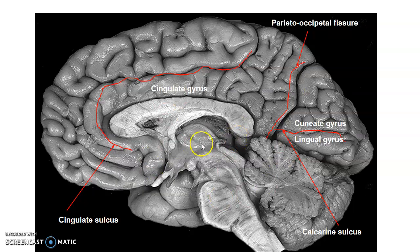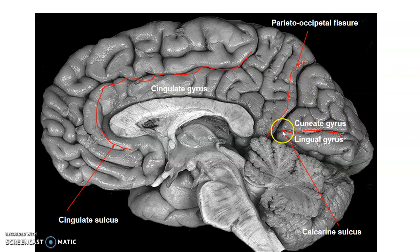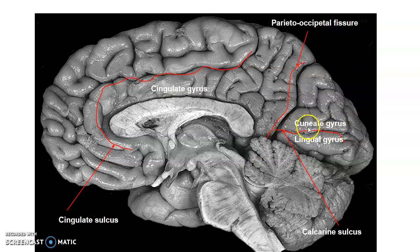This is the medial aspect of the brain, showing the frontal lobe, parietal lobe, and occipital lobe. This is the parietal-occipital fissure, which is only on the medial surface of the brain; it separates the parietal gyrus from the occipital lobe. Then we have the calcarine sulcus. The calcarine sulcus meets the parietal-occipital fissure and together they form a Y-shape. Dorsal to it is the lingual gyrus and ventral to the calcarine sulcus is the cuneus gyrus. Those are the two major gyri of the occipital lobe: dorsal lingual and ventral cuneus gyrus.